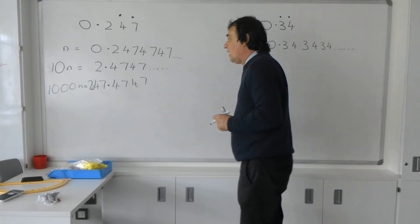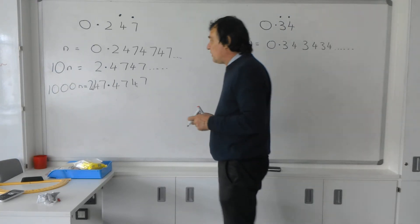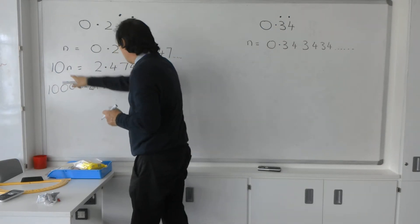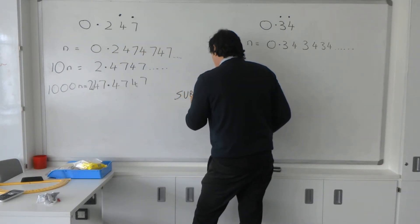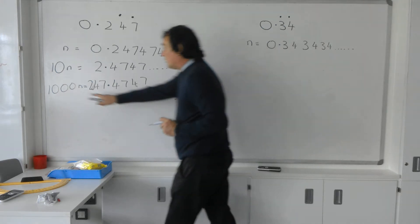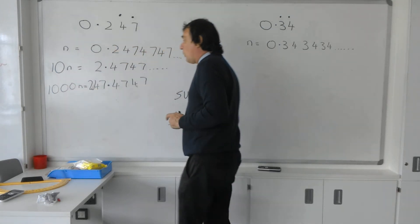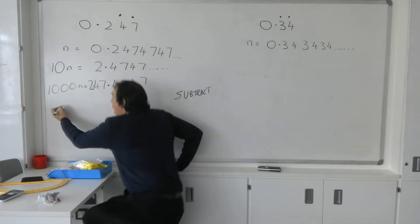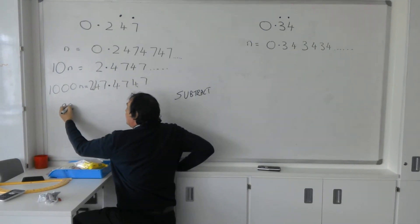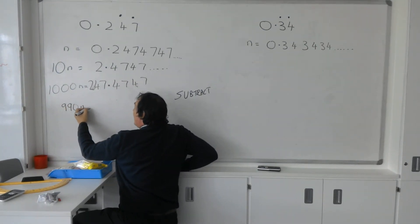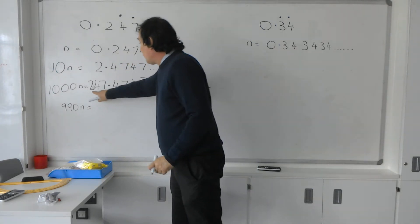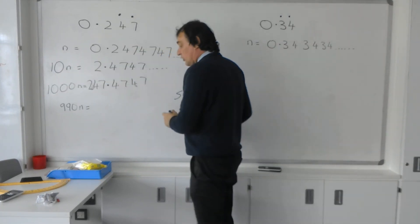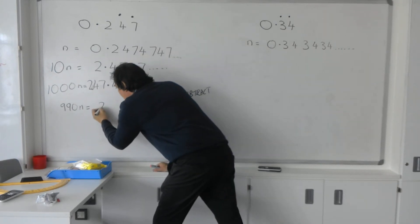What I can now do is subtract one from the other. So 10 take away—let's write subtract there. So I've got my 1,000 take away my 10 to give me 990N, and that's equal to 247 take away 2, which is 245.